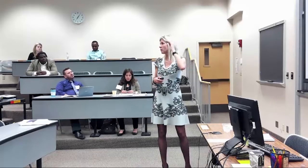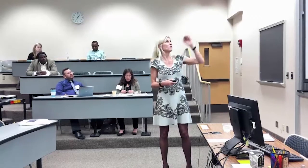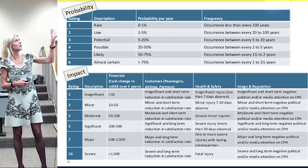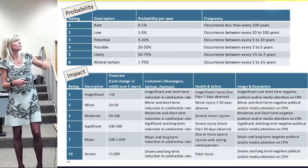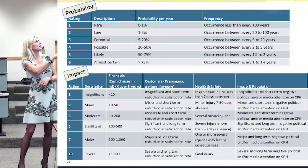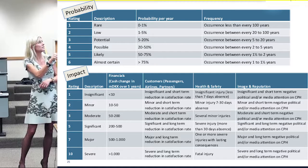When we look at probability and impact, we have a scale from 1 to 6 on each. As you see, here it's rated 1, 2, 3, 4, 5, 6, and here it's 1, 2, 3, 5, 7, 10.